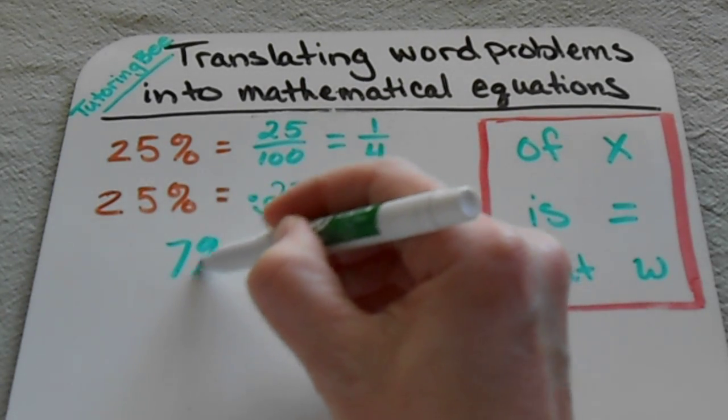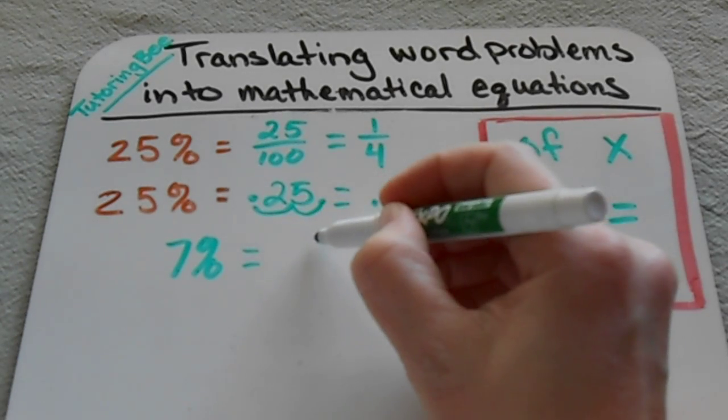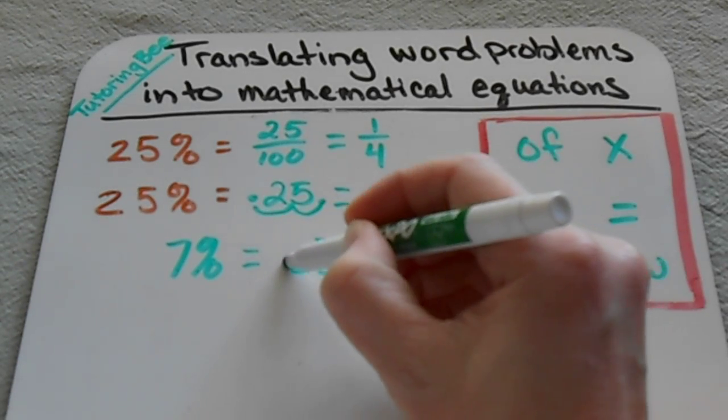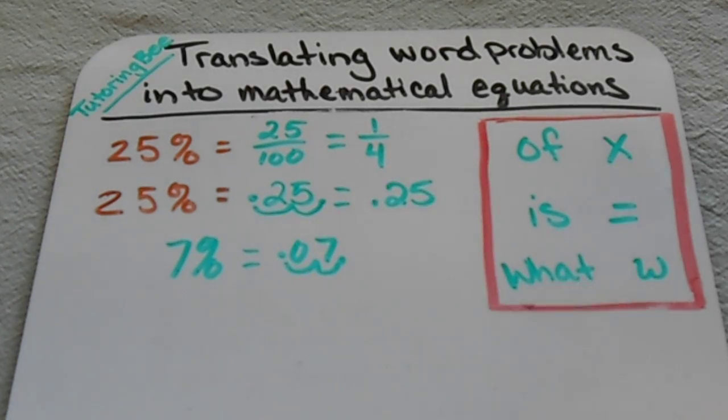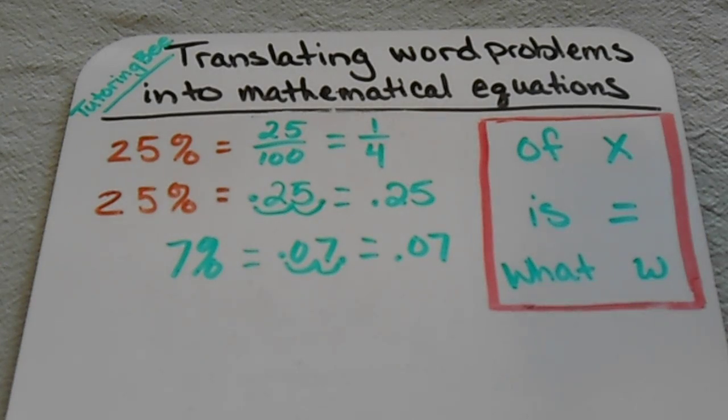Now don't forget, when you have a one-digit percent, like for example seven, you still have to move that decimal over two times and then fill in that space with a zero. So this is 0.07 or seven hundredths.